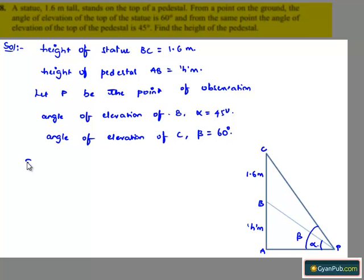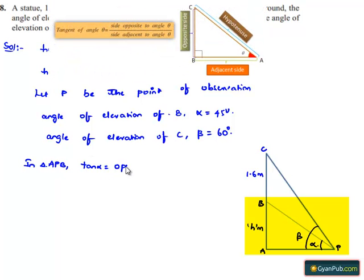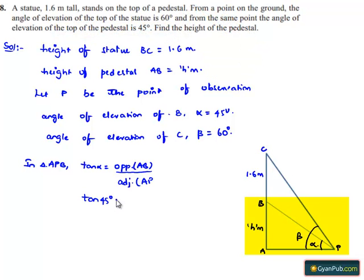Now, considering triangle APB: tan(alpha) equals the opposite side AB divided by the adjacent side AP. That is, tan(45°) = AB/AP = H/X, where we assume AP = X meters. Since tan(45°) = 1, we get H = X. Let this be equation number 1.